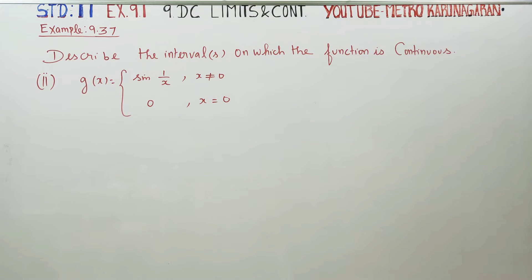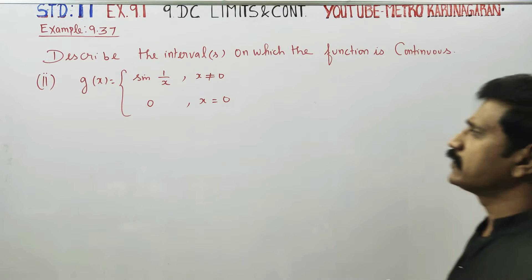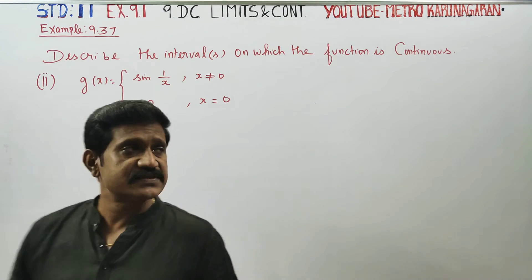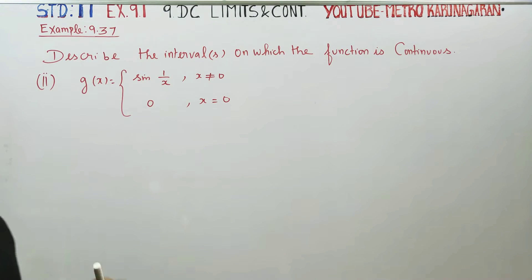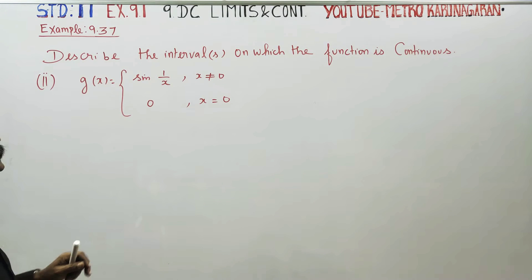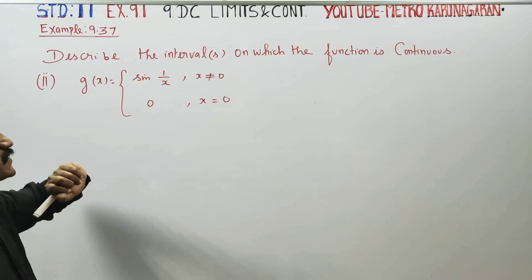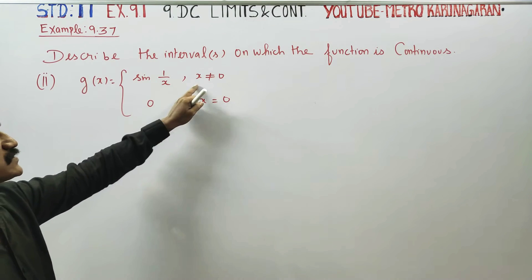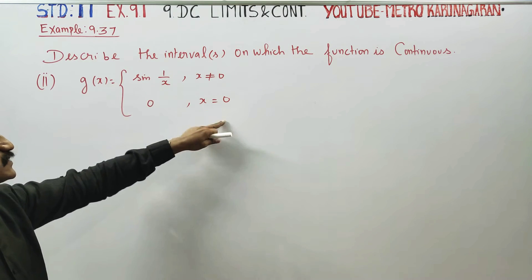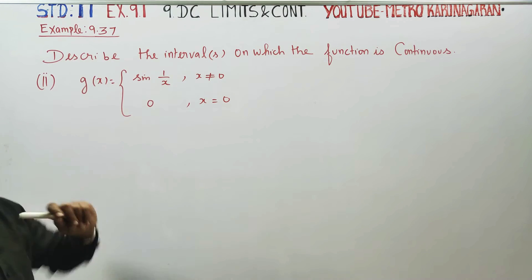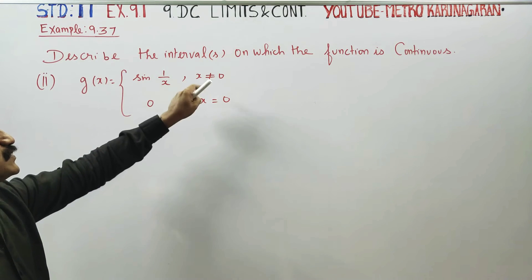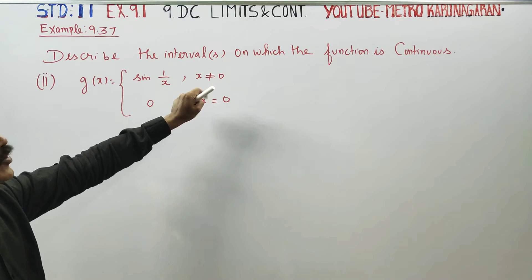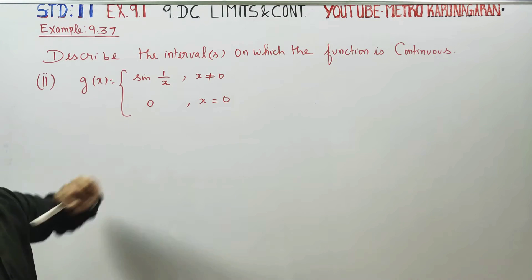Dear Learn Standard Students, in Example 9.37, you have to find the intervals on which the function is continuous. g of x is equal to sin(1/x) when x is not equal to 0, and g(0) equals some value when x equals 0. So x equals 0 is the problematic point.